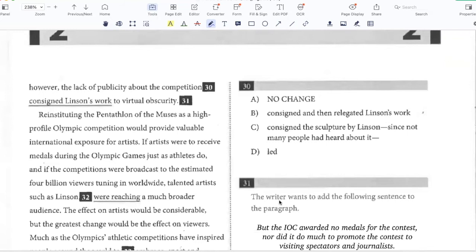However, the lack of publicity about the competition consigned Linson's work to virtual obscurity. So to consign his work to obscurity, that is good as it is, so I like A. 'Consigned and then relegated' - this is repetitive. To consign is to relegate, so it's not B. 'Consign the sculpture by Linson since not many people had heard about it' - the fact that not many people had heard is already mentioned in the lack of publicity, so this is repetitive. 'Lead' is not correct, because I need to say that the lack of publicity consigned his work to virtual obscurity, not led to virtual obscurity. So A is the best answer.